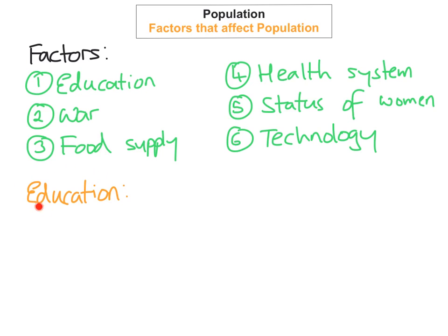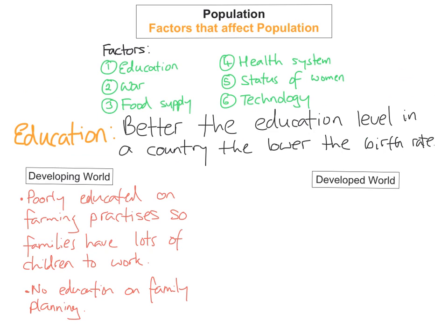So the first thing I'm going to look at in detail is education. Basically, the better the education level in the country, the lower the birth rate in that country. In developing worlds, people are usually poorly educated on farming and the uses of technology in farming. Because of this, they have quite large families so they can have loads of children to work on the farm. Another reason why a lack of education equals higher birth rates is because there's no education on family planning, and so they tend to have quite large families as a result.